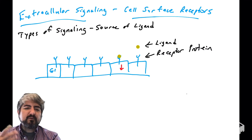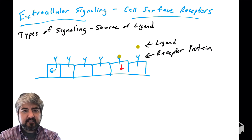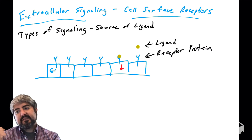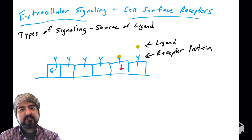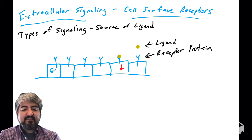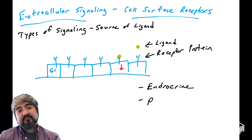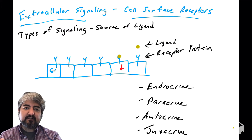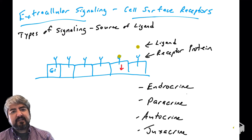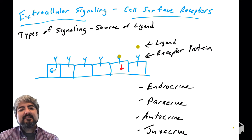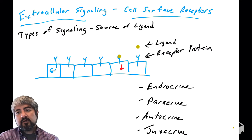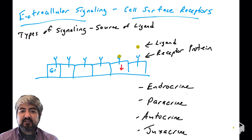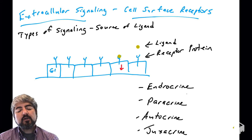What we're talking about here is signaling — cells telling other cells what to do. This is probably a good time to review cellular signaling and the different types of cellular signaling. There are four main types — there are more — but four types of cell signaling: endocrine, paracrine, autocrine, and juxtacrine signaling.